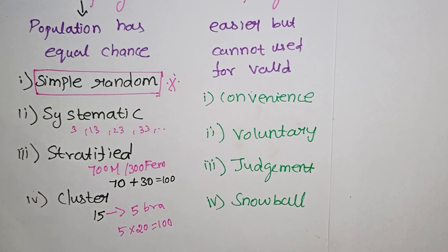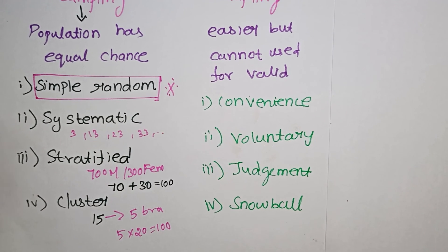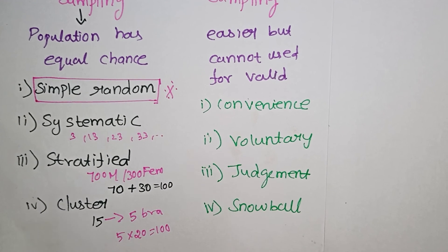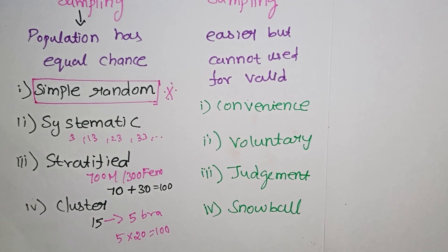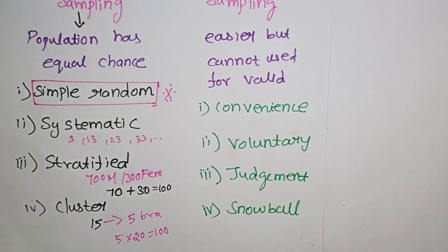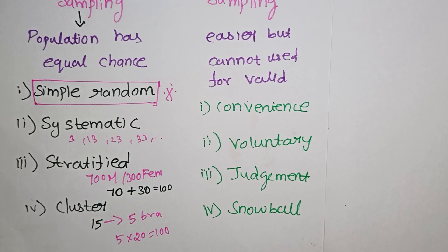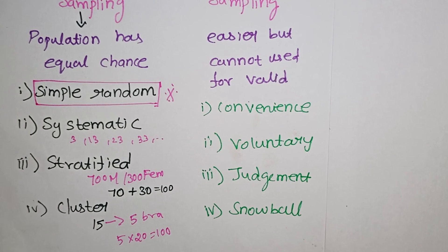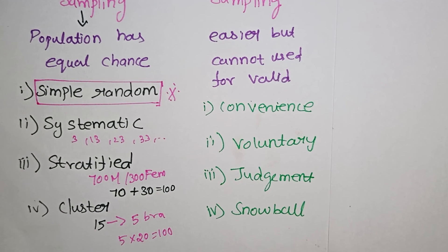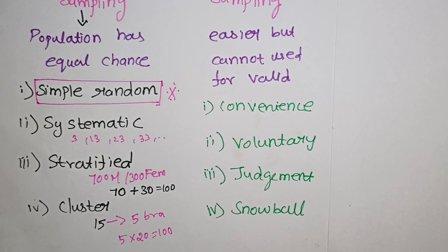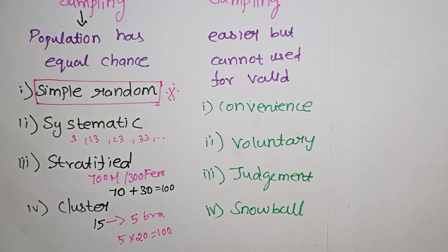So we have probability sampling and non-probability sampling. For inferential statistics, there are three methods: point estimation, interval estimation, and hypothesis testing.